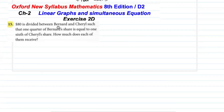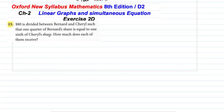$80 is divided between Bernard and Cheryl such that one quarter of Bernard's share is equal to one sixth of Cheryl's share. How much does each of them receive? Here we need to calculate how much amount Bernard and Cheryl each received.